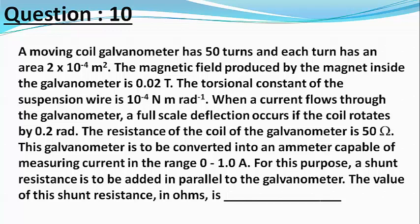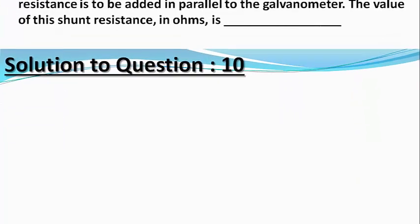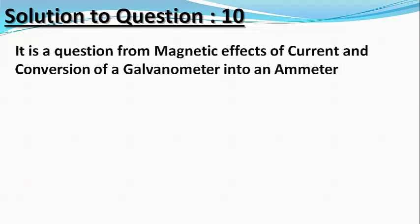Very clearly, this is a question from magnetic effects of current and the conversion of a galvanometer into an ammeter of desired range. The answer is to be given in numerical form with two digits after the decimal. Please press the subscribe button and don't forget to press the bell icon to receive notifications of all future videos.